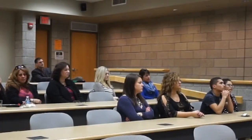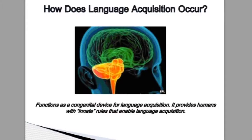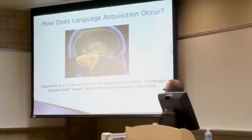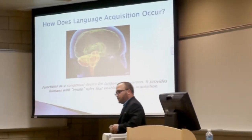To the innatist theorist, there is a language acquisition device that they suggest we have in our brain. We have an LAD — a language acquisition device — in our brains that functions as a congenital device for language acquisition. And what it does is it provides us with innate rules of language development.